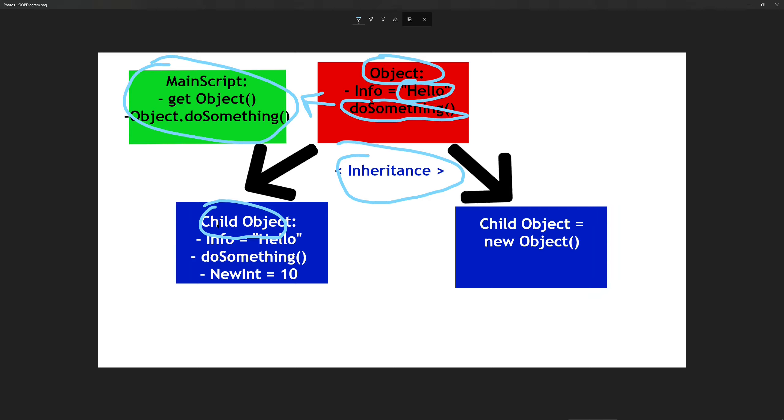So this child object has access to both this string and this function. We can also assign other values such as this integer right here.